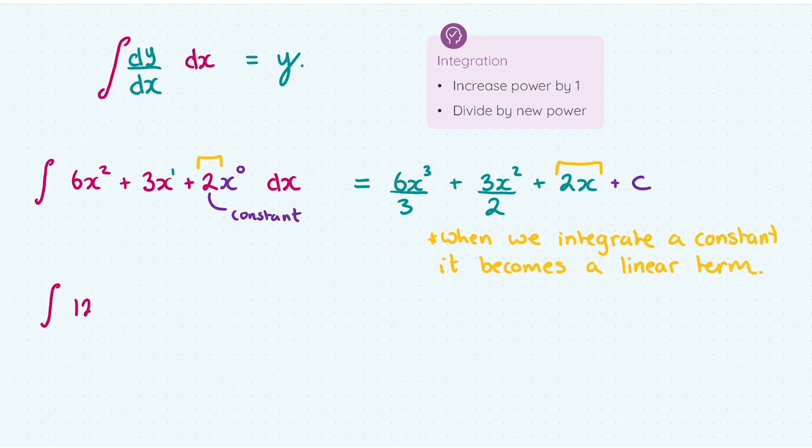Next up, say we wish to integrate 12x³ + 5x² - 2x + 3. Well, let's apply our rule. For 12x³, I increase the power and divide by the new power, which is four.